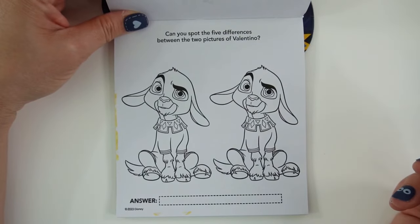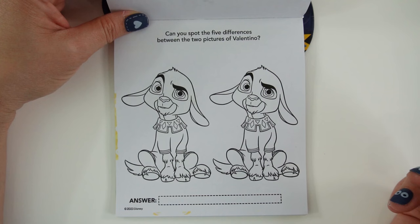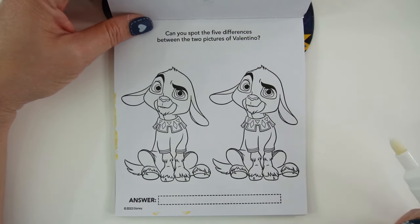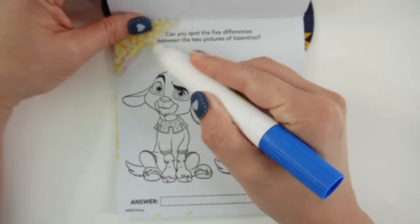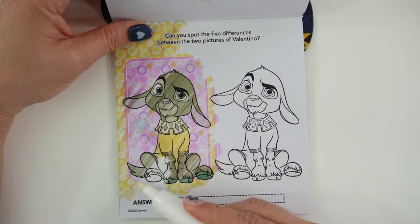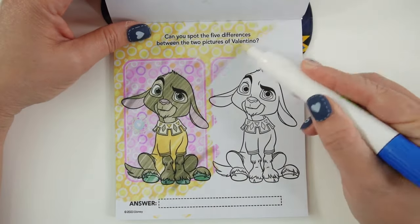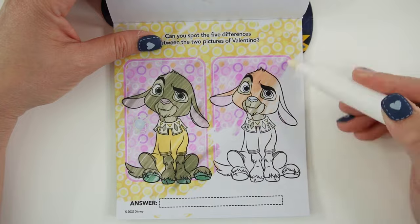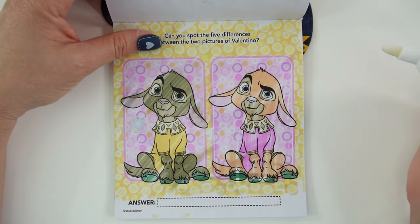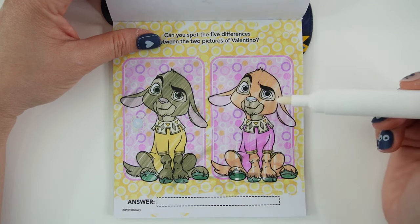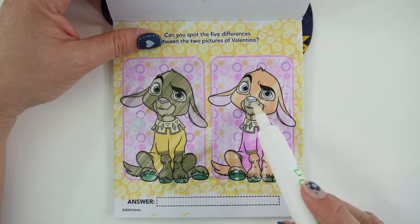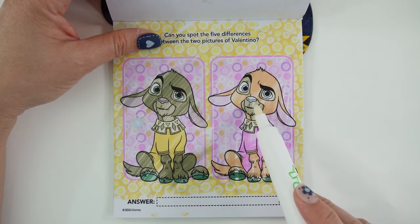On this page it says, can you spot the five differences between the two pictures of Valentino? So here they look identical. Now let's color him in. Here's the first goat. All right, so his fur color is different. One is brown, one is orange. His nose color is different. One is pink, one is blue. His eye colors are different. One is green, one is blue.